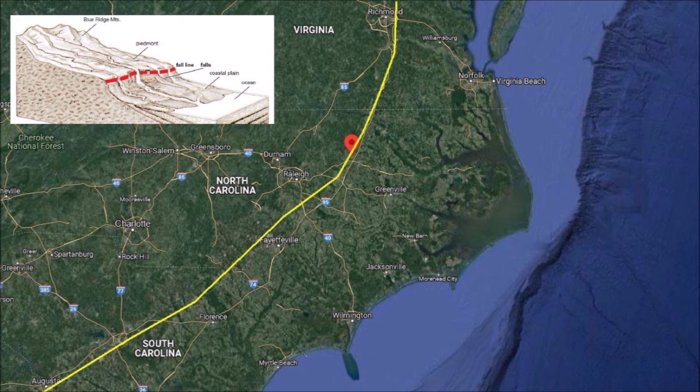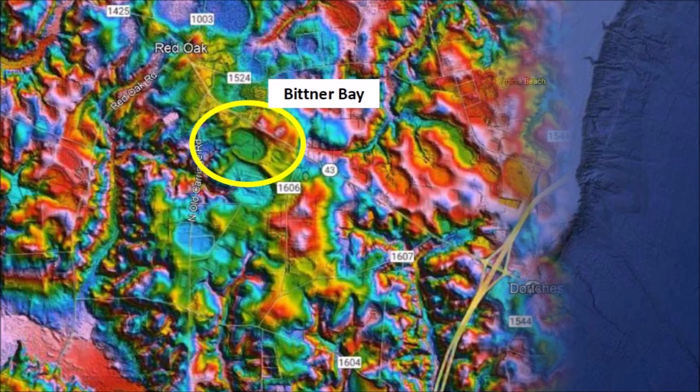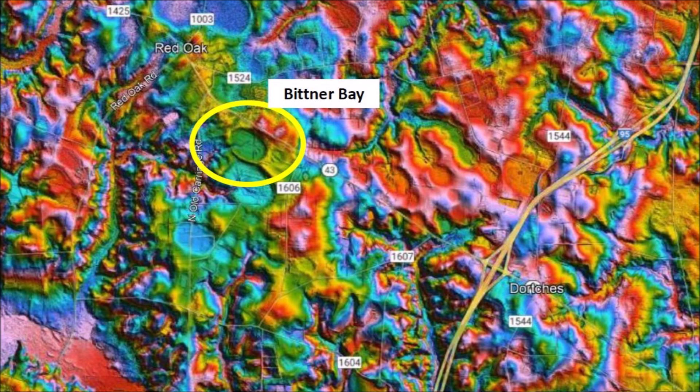The fall line is a narrow zone that marks the geological boundary between an upland region and a plain, distinguished by the occurrence of falls and rapids where rivers and streams cross it. The roughness of the terrain where Bittner Bay is located can be appreciated with the LiDAR image that displays the topography with a range of colors.